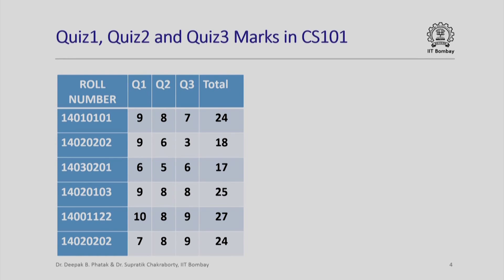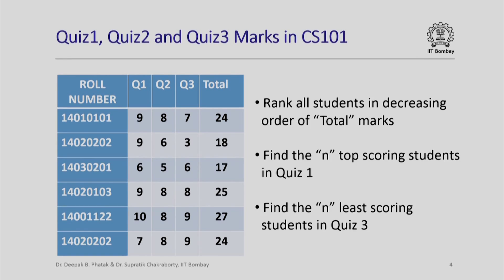Here is a simple example. In a table or spreadsheet I have listed the quiz 1, quiz 2 and quiz 3 marks of several students taking CS101. Each entry represents marks of a particular student in a particular quiz and we have added up all of these marks to get the total mark. Given this table, one might ask: can we rank the students by roll number in decreasing order of total marks, or find the n top scoring students in quiz 1, or find the n least scoring students in quiz 3, where n could be user specified.